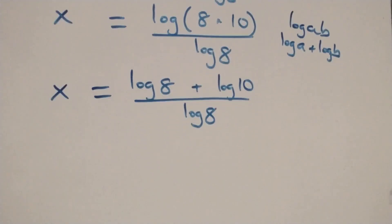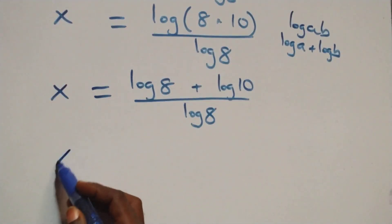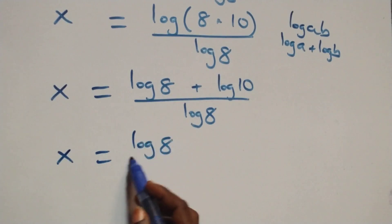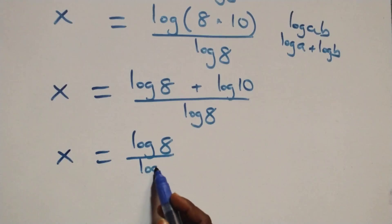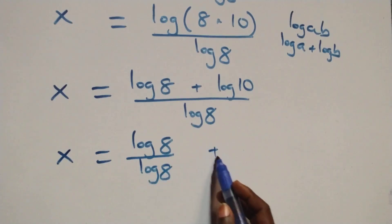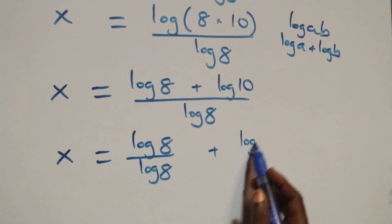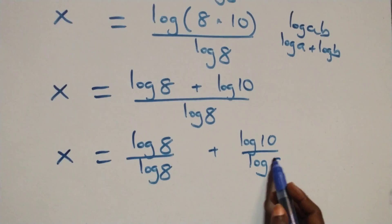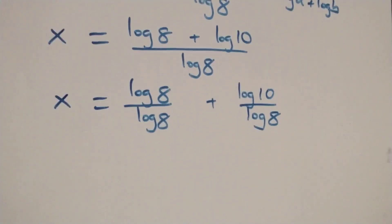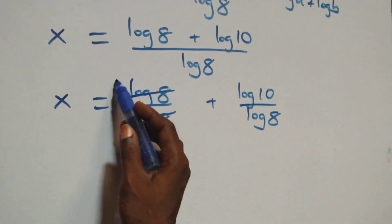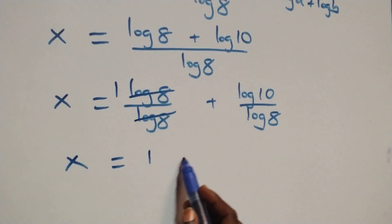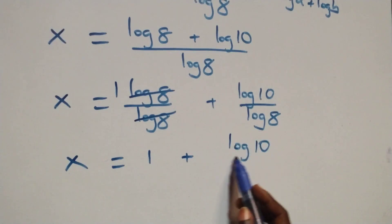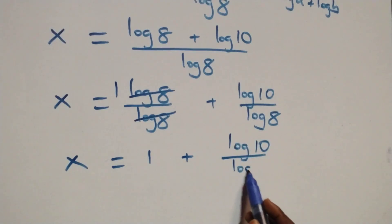We separate this into two fractions: x equals log 8 over log 8 plus log 10 over log 8. Log 8 cancels in the first fraction, giving us 1, so x equals 1 plus log 10 over log 8.